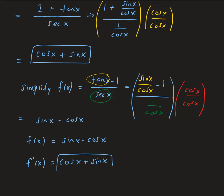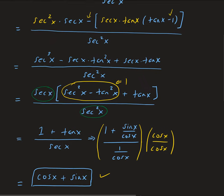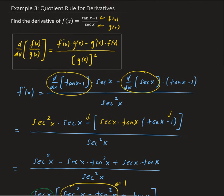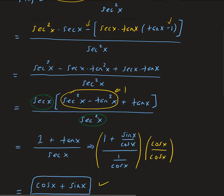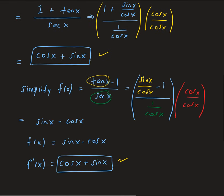We get the same result. Sometimes it's easier to find the derivative when we simplify first and then take the derivative — not always, but sometimes. This was a good example of showing the quotient rule, and then showing that you can simplify the function first and take the derivative to get the same result.